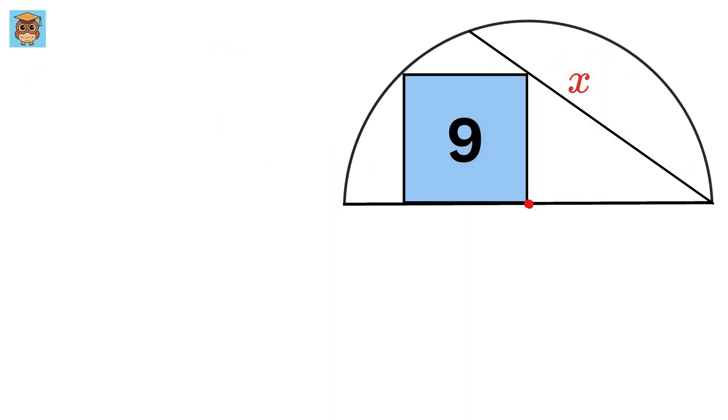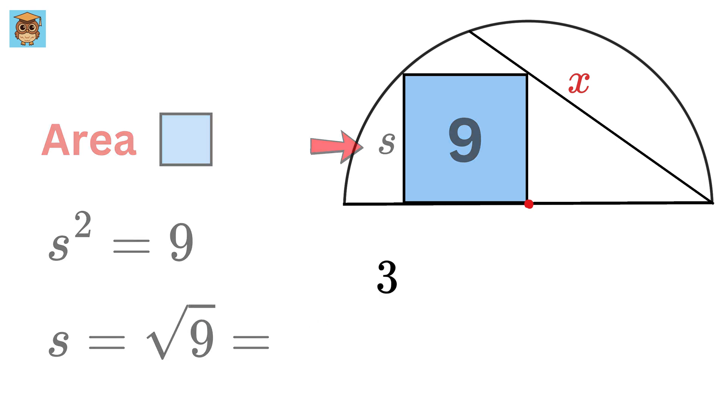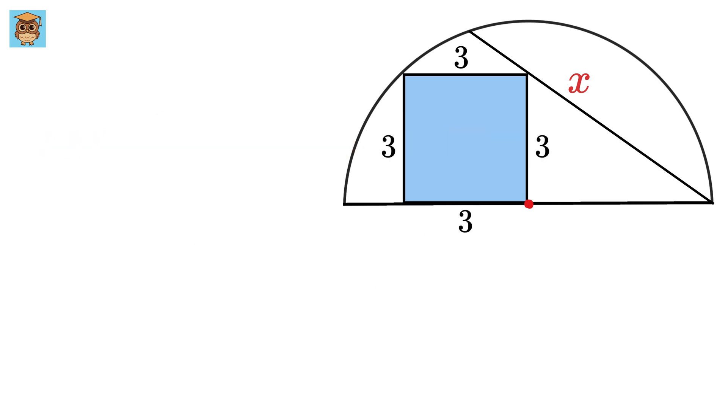Now as a first step let us label the side of this square as s. Thus the area of this square will be s square which is equal to nine. Hence the value of s will be root nine or three units. So all of them will be three units as well.